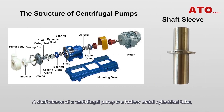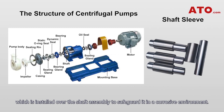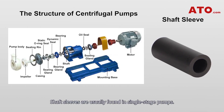A shaft sleeve of a centrifugal pump is a hollow metal cylindrical tube which is installed over the shaft assembly to safeguard it in a corrosive environment. Shaft sleeves are usually found in single stage pumps.